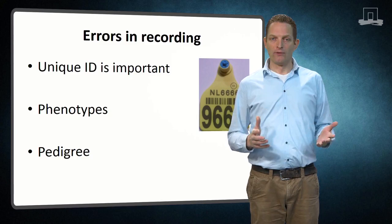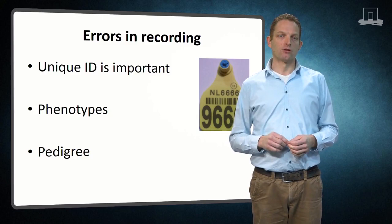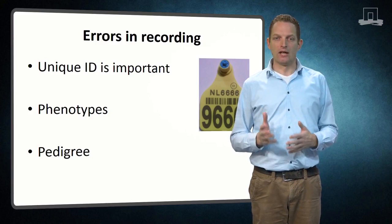Both phenotypes and pedigree records may contain some errors. It is important that in phenotype and pedigree recording unique IDs are used, such that linking different sources of data does not introduce errors.